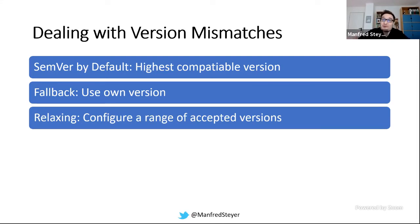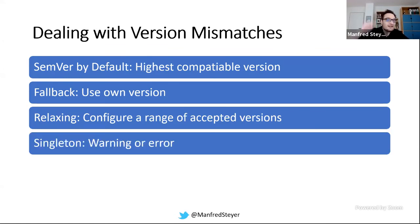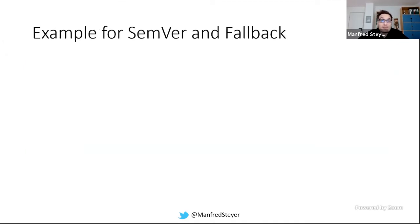Or we could declare a library as a singleton — only one specific version is allowed — and if there's no highest compatible version, emit a warning or throw an error. The 'fail fast' strategy: if something doesn't work, fail fast to prevent further issues during execution. Let's look at some thought experiments. Assuming we share a lib called mylib, the shell needs version 10, micro front-end 1 needs 10.1.1, and micro front-end 2 needs version 9.